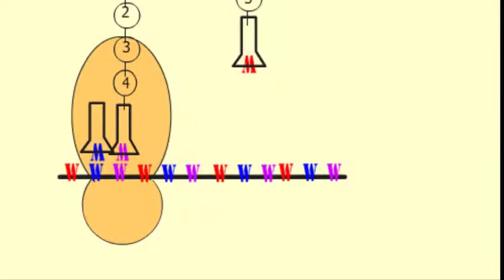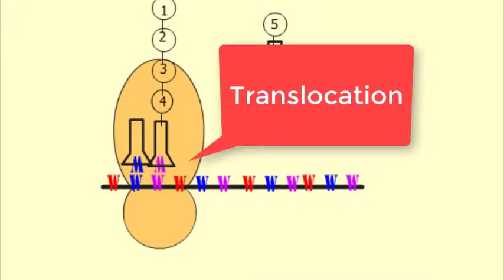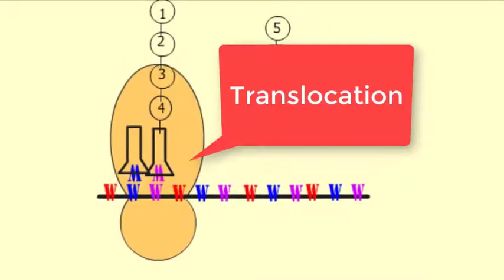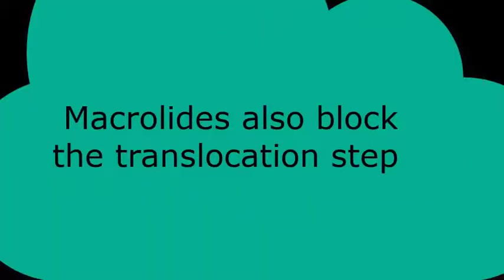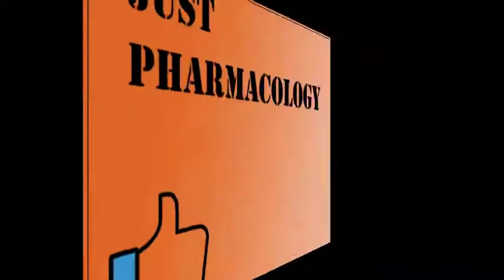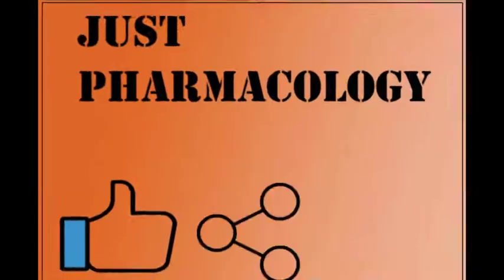Clindamycin binds to the 50S ribosomal subunit and blocks the translocation step, in which the nascent peptide is transferred from the A site to the P site after the formation of a new peptide bond. Macrolides also act by this mechanism.